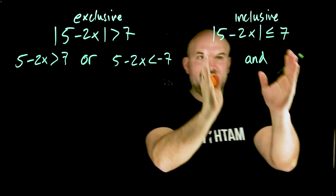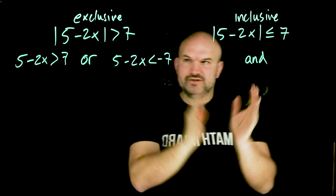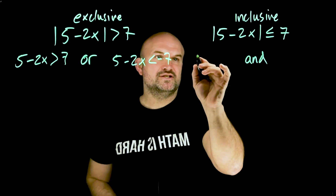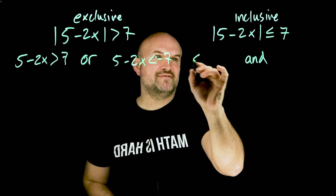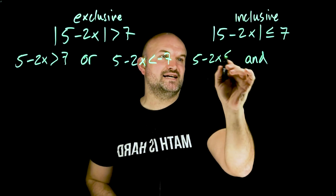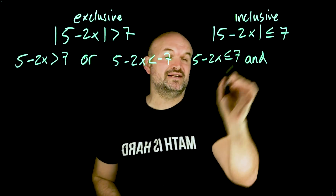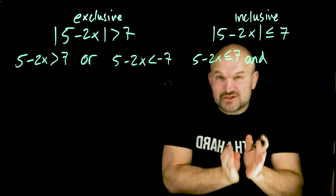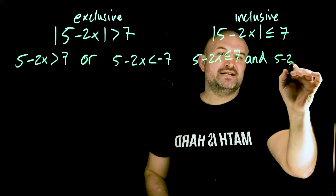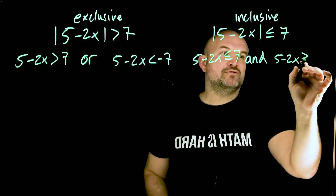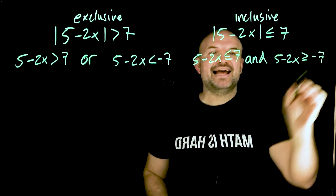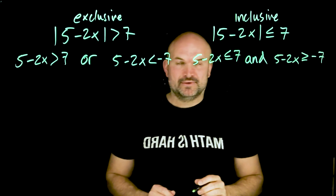Over here, we're going to do the exact same thing, but this 'and' is going to be so important. In this case, we have five minus two X is less than or equal to seven, and what also has to be true is five minus two X has to be greater than or equal to negative seven.